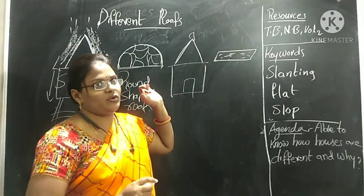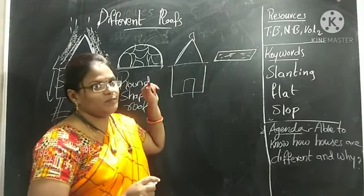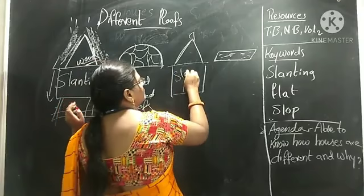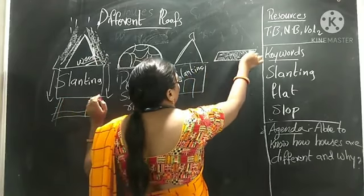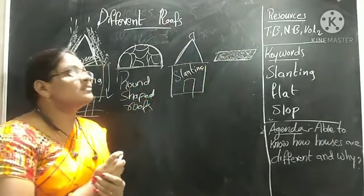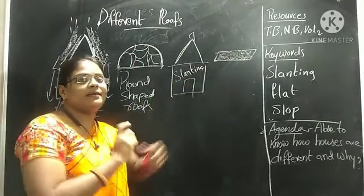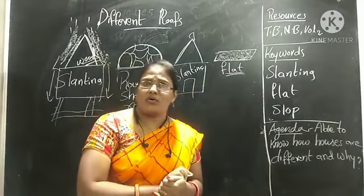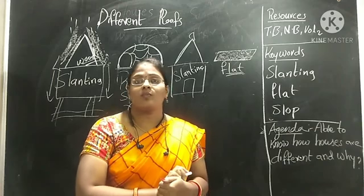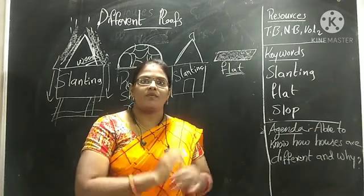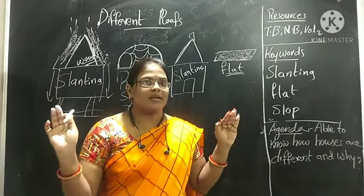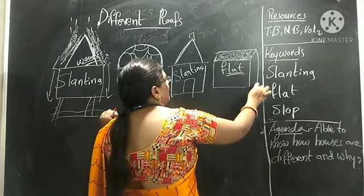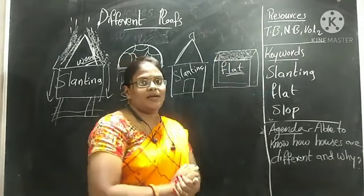We can find huts in every place, not only cold place, not only hot place. This one also the shape we call it as slanting. Now look at your building. How is your roof? Slanting or round or flat? Flat. Our houses are flat. The place where we live, we don't have heavy rain, we don't have heavy snow, we don't have heavy summer. We have every season for two to three months.